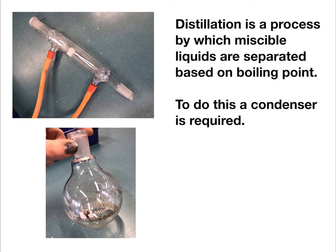A condenser can be as simple as a wet paper towel around the mouth of a flask, or the more complex kind shown here. This version has cold water passed through the outer shell of glass to continually cool the gases. The lower tube is connected to the tap. Distillation can also be carried out by cooling mixtures of gases to condense each gas in turn.